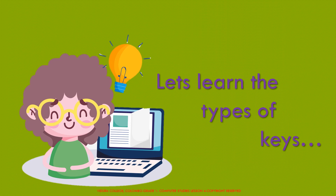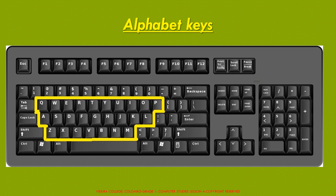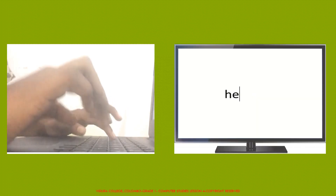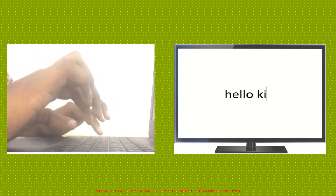Let's learn the types of keys. Alphabet keys — the keys that have the letters from A to Z on them are called alphabet keys. We use these keys to type letters or words. As there are 26 alphabets in the English language, there are 26 alphabet keys on the keyboard. When you press the letters on the keyboard, it appears on the monitor screen.